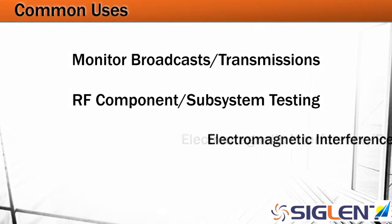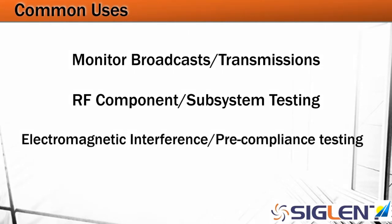Then we've got electromagnetic interference and pre-compliance testing. This is a little bit more specialized — for companies or people that happen to be ready to sell their product. Governments will regulate the amount of interference or the amount of RF output over particular frequency ranges that a product is allowed to emit.